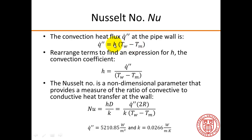H is the convection coefficient, and we can rearrange this equation to get an expression for H, which is done over here. The Nusselt number is a non-dimensional parameter that provides a measure of the ratio of the convective to conductive heat transfer at the wall.